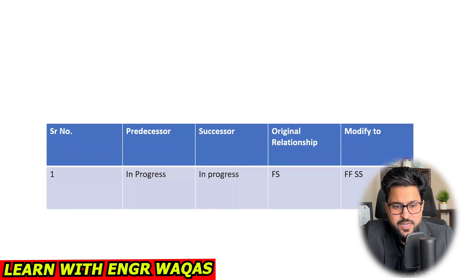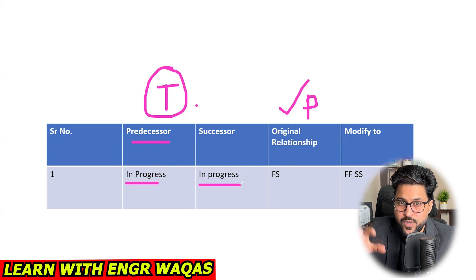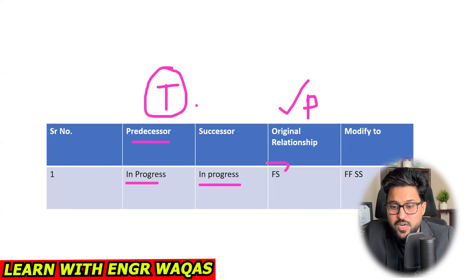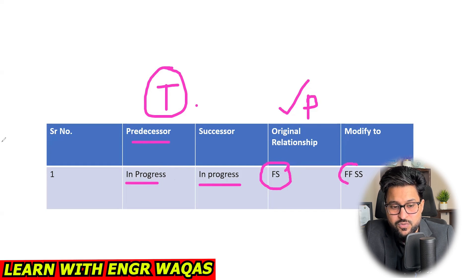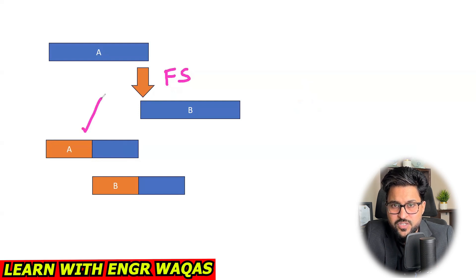Here is the first situation: both activities are linked with each other. In the planning phase the relationship is finish-to-start — it was supposed that the predecessor would finish before the successor starts. But in the tracking phase, both activities are in progress. This can cause out-of-sequence activities. To settle this, the finish-to-start relationship needs to be changed to either finish-to-finish or start-to-start.